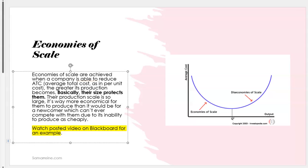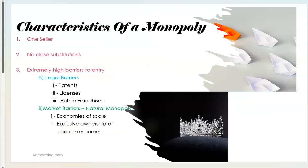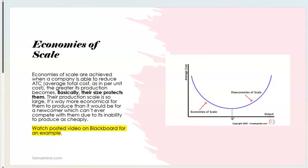Welcome back guys, we are now on video two for chapter nine which is monopolies. We were discussing the barriers to entry up here and we said that barriers to entry include economies of scale and exclusive ownership of a scarce resource.